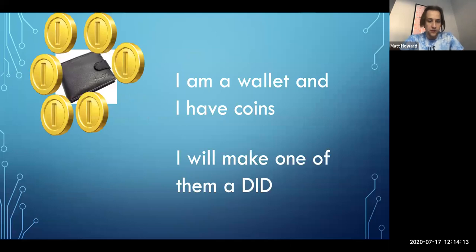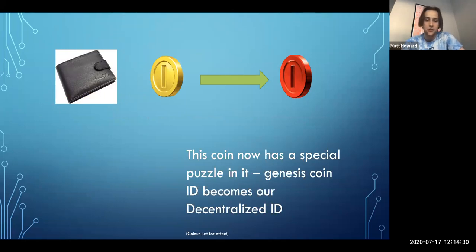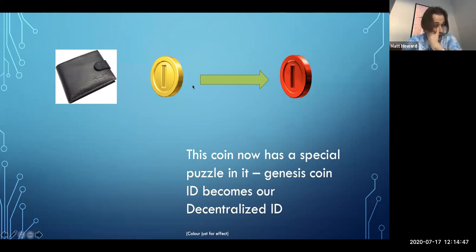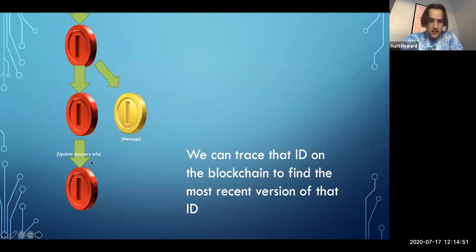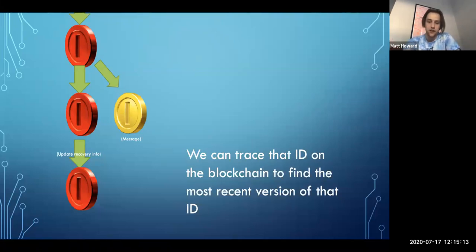The general flow is: you're a wallet with coins, you can turn one of those coins into an identity. That identity will have some value inside it, but fundamentally you're using it as an ID. The unique ID — the 'did:chia' code — comes from the ID of the genesis coin in our implementation. What's neat is that once you have that ID, you can trace the full history: any time something happens with the DID you can find the most recent version and all related information just by following the blockchain.